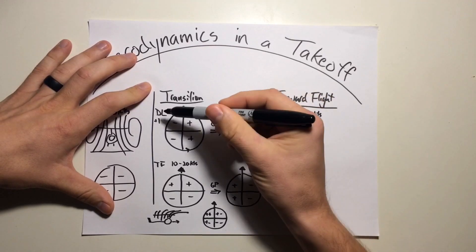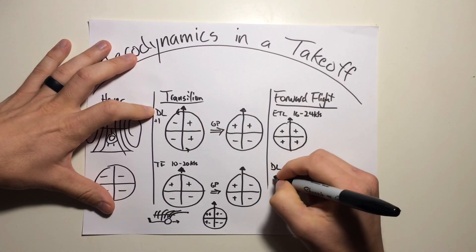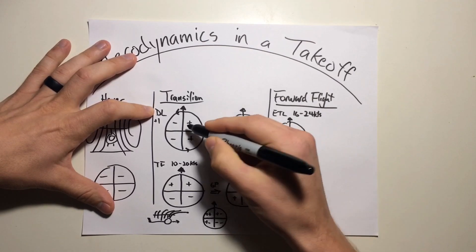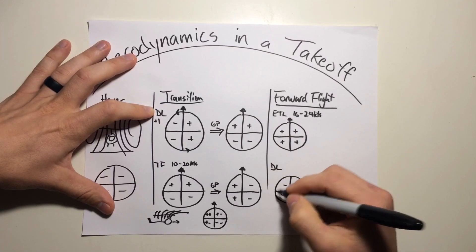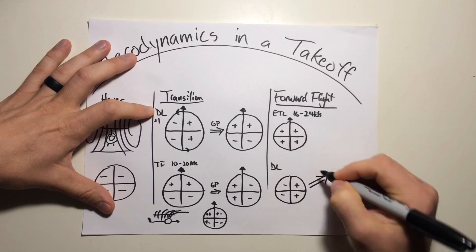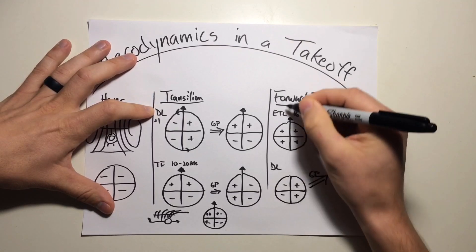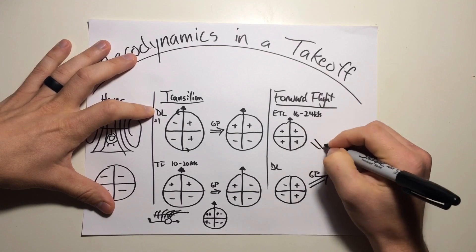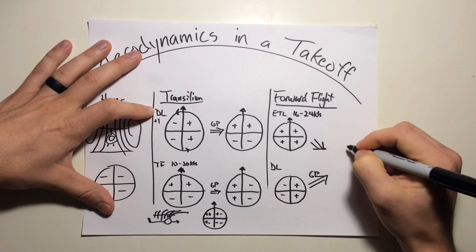As we're in forward flight, we still have to take into account dissimetry of lift because this is any kind of velocity as we move forward. So we'll carry this over. Same thing as we had before, more lift on the advancing side than the retreating side. We're going to account for gyroscopic precession. Combining these two because these are both in effect in forward flight. This one's not going to have much of an effect on gyroscopic precession because it's equal across the rotor disk.